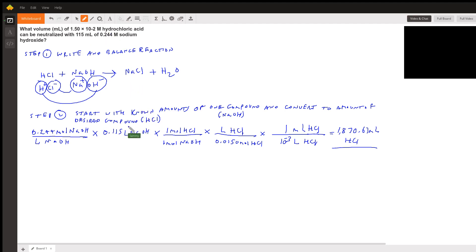We're going to start with the molarity of sodium hydroxide. We have 0.244 molarity, which is moles of NaOH per liter of NaOH. We're going to multiply that by 115 milliliters, which is 0.115 liters NaOH. The liters will cancel out, and we're left with moles of NaOH.